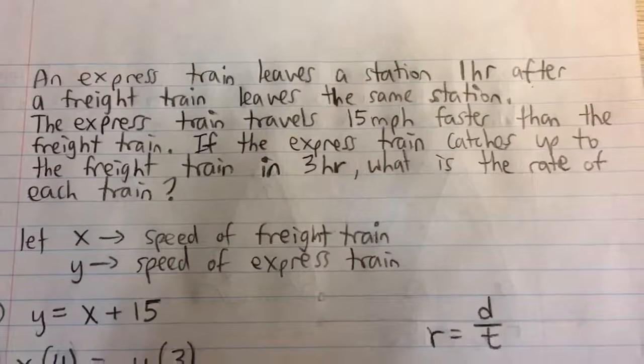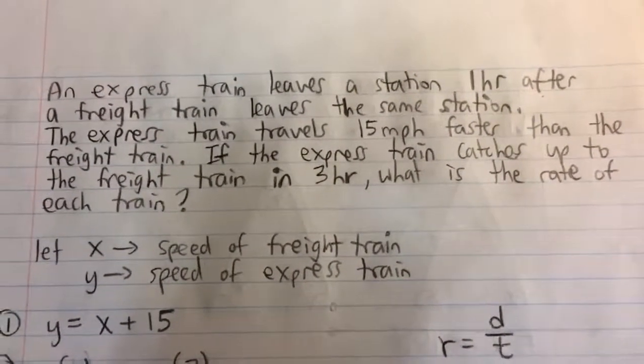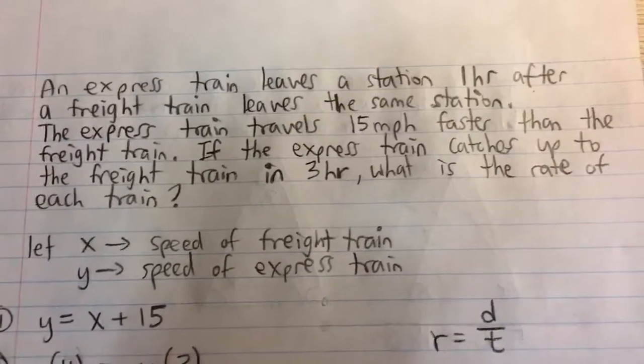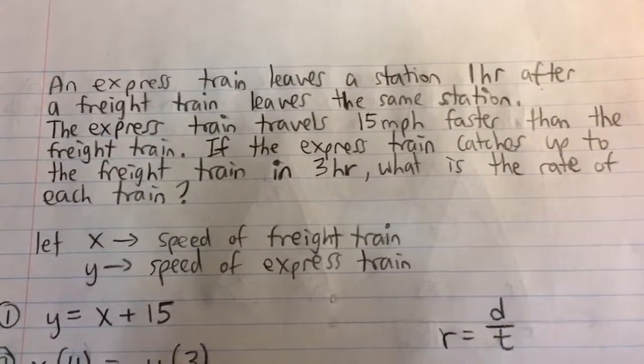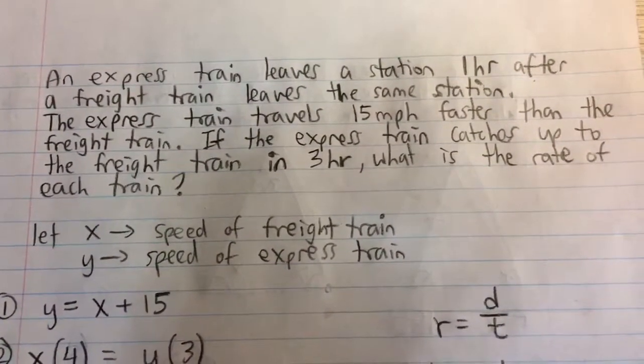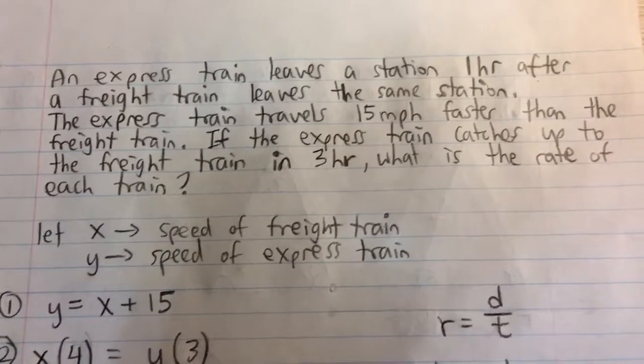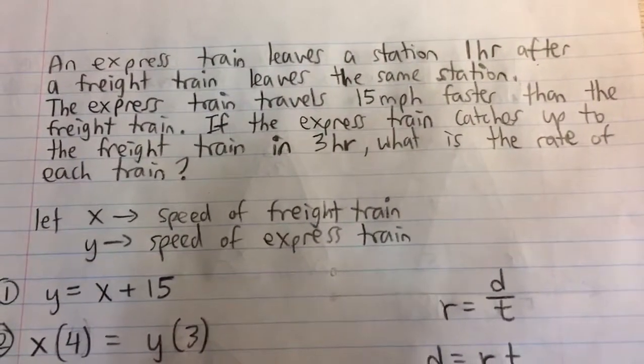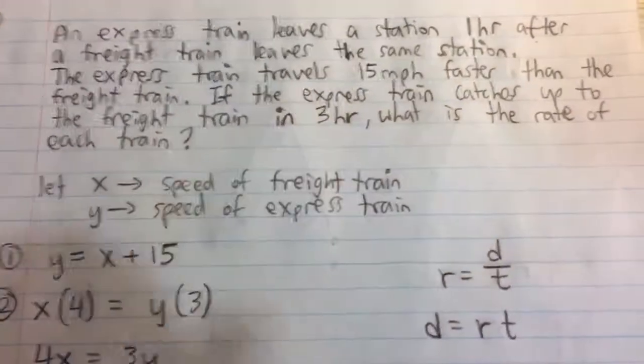An express train leaves a station one hour after a freight train leaves the same station. The express train travels 15 miles per hour faster than the freight train. If the express train catches up to the freight train in three hours, what is the rate of each train? In other words, what is the speed of each train?